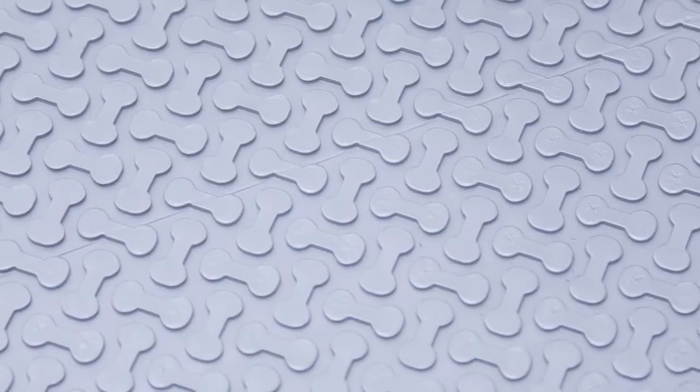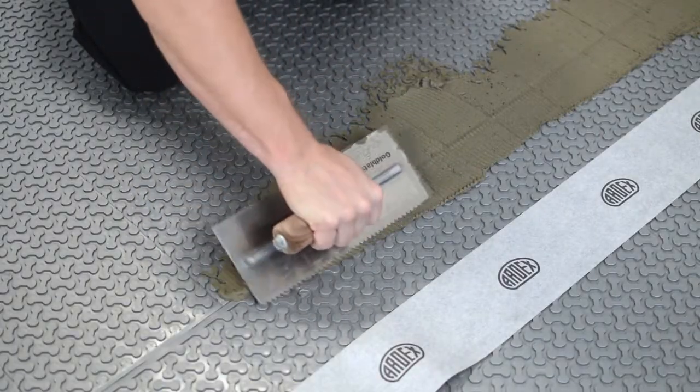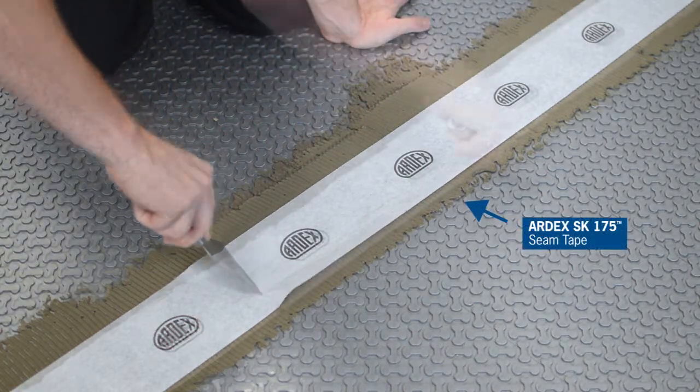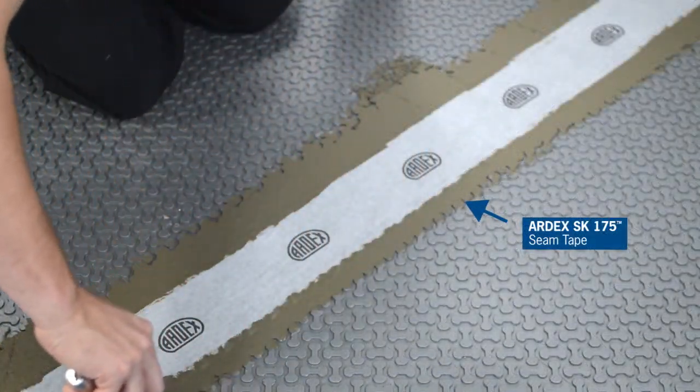Ardex UI 740 FlexBone can be used as a topside waterproofing membrane. In waterproofing applications, Ardex SK-175 seam tape must be installed over all the membrane seams and at the changes of plane.